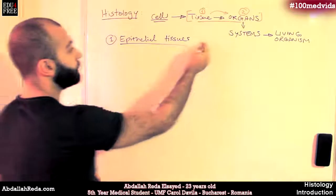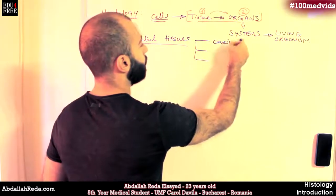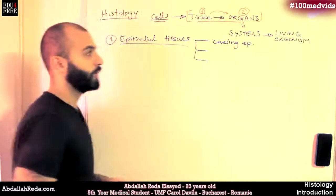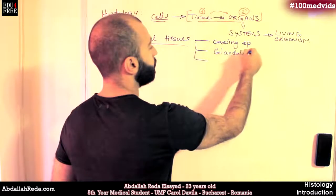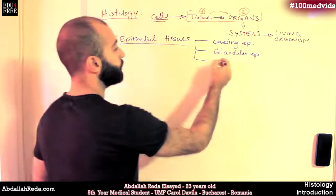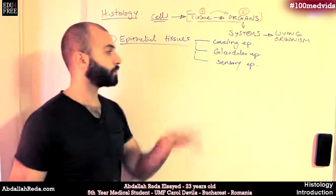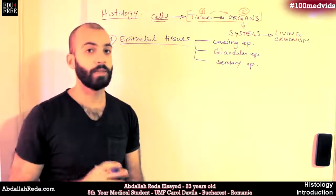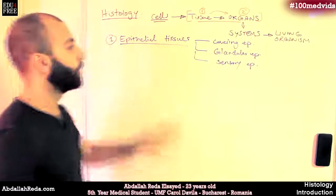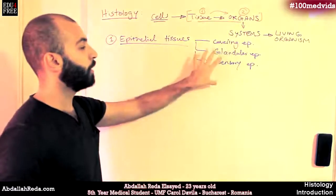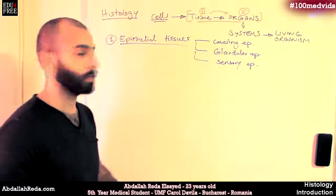The epithelial tissues have three subcategories. The first one is called covering epithelium. Then we have glandular epithelium. And finally we have sensory epithelium — like the epithelium in the inner ear, in the nasal mucosa, or on the skin. So all of those are different types of epithelial tissues, and this is the first type of tissue we're going to talk about.